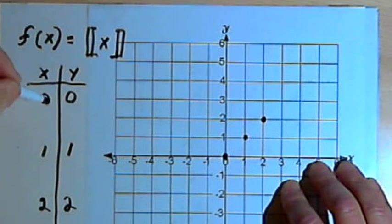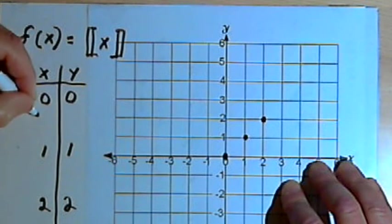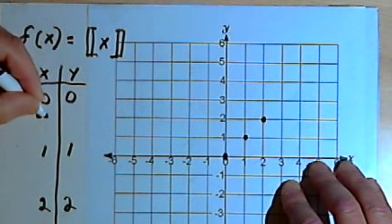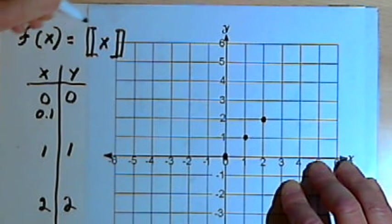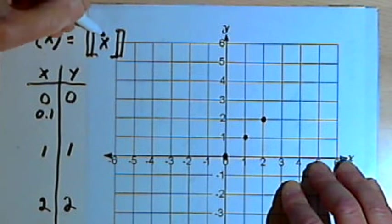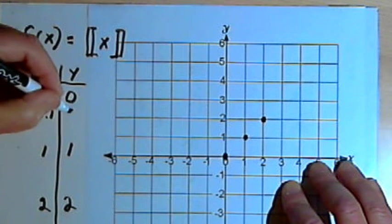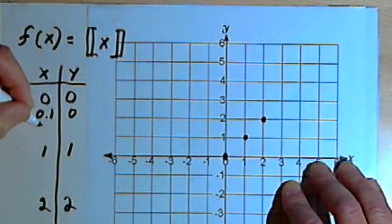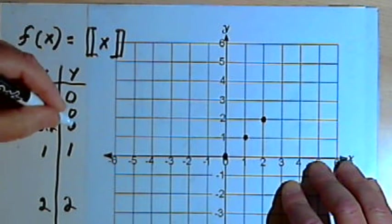Now, let's fill in some numbers in between the 0 and the 1. If I have 0.1 and I want the greatest integer value of 0.1, well, I'm going to have to go down from 0.1 to an integer, and that's going to be 0. The same thing would happen for 0.2. That's going to be 0.